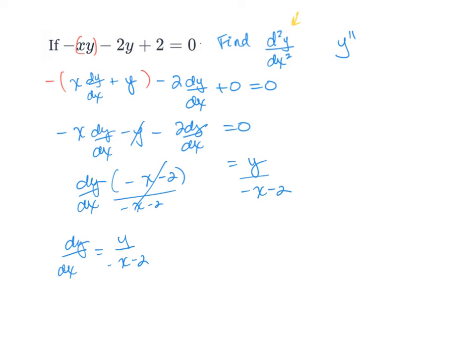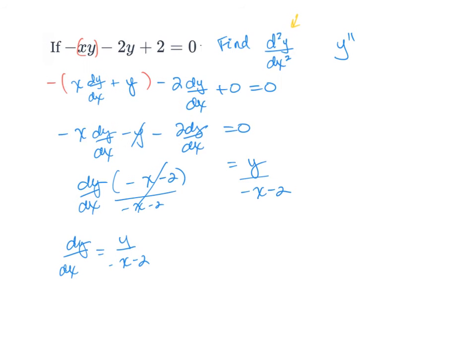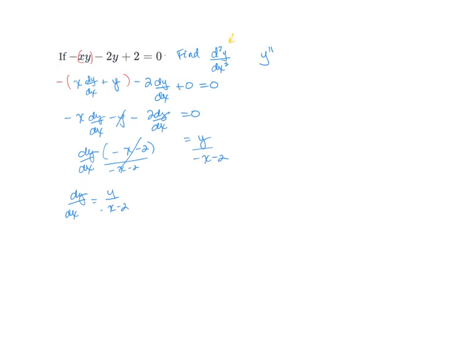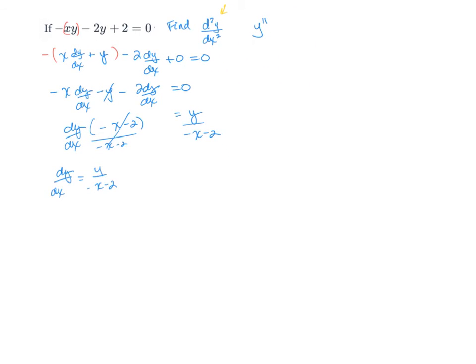So now what we're going to do is we're actually going to find the second derivative. So that was the first derivative. Now we're going to find the second derivative. In order to do that, we're going to take the derivative of both sides with respect to x. So on this side, we have d²y/dx².